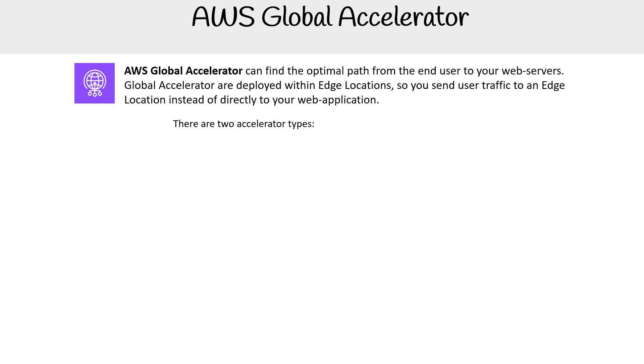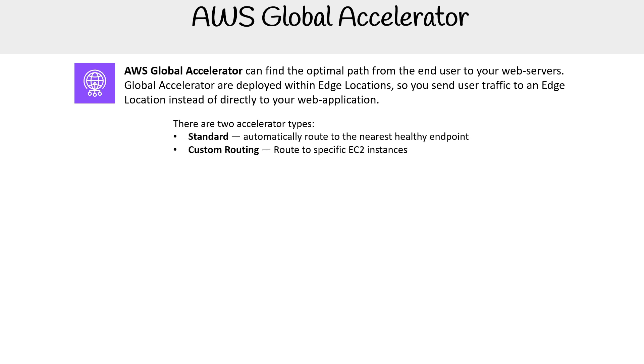There are two types of accelerators: standard, which automatically routes to the nearest healthy endpoint, and custom routing, where you're specifying that you want to route to a specific EC2 instance.